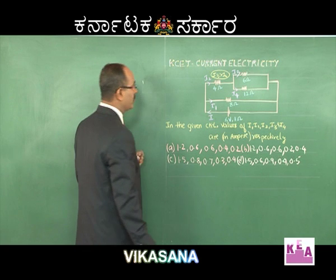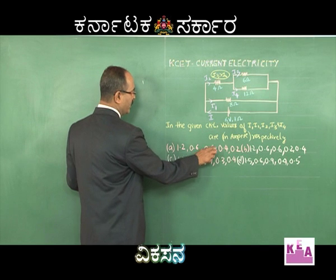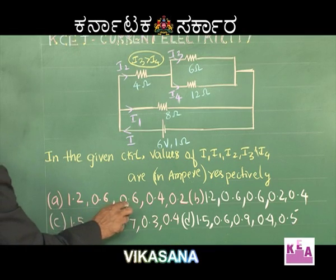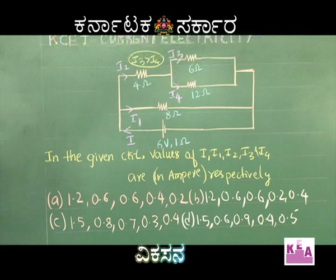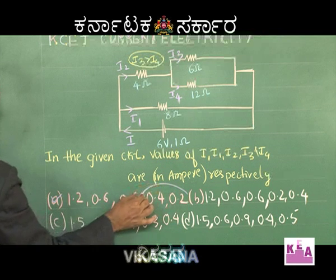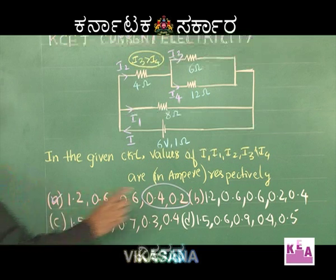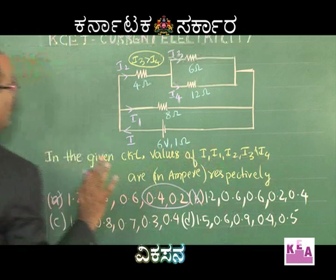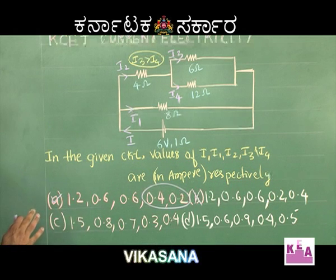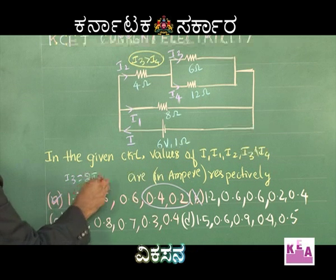I3 must be greater than I4. Looking at option A: I, I1, I2, I3, I4 are 1.2, 0.6, 0.6, 0.4, 0.2 — I3 is greater than I4 and I3 is double I4, so option A may be correct. Option B is ruled out because I3 is 0.2 and I4 is 0.4, which is the reverse. Very importantly, I3 must be equal to 2 times I4.